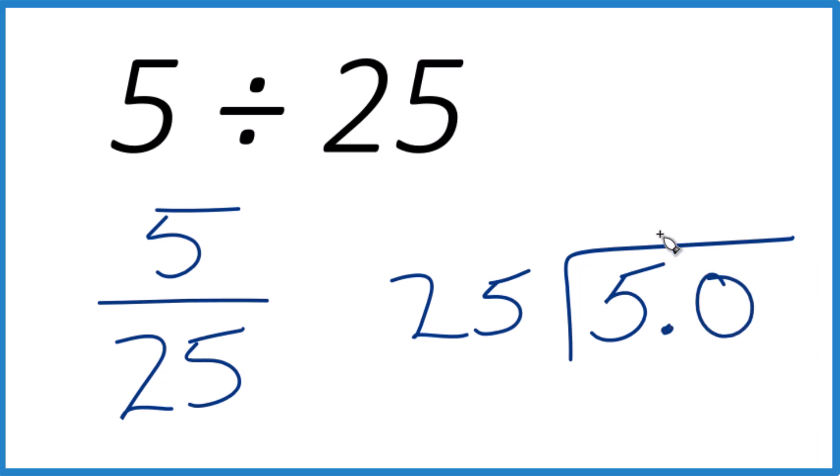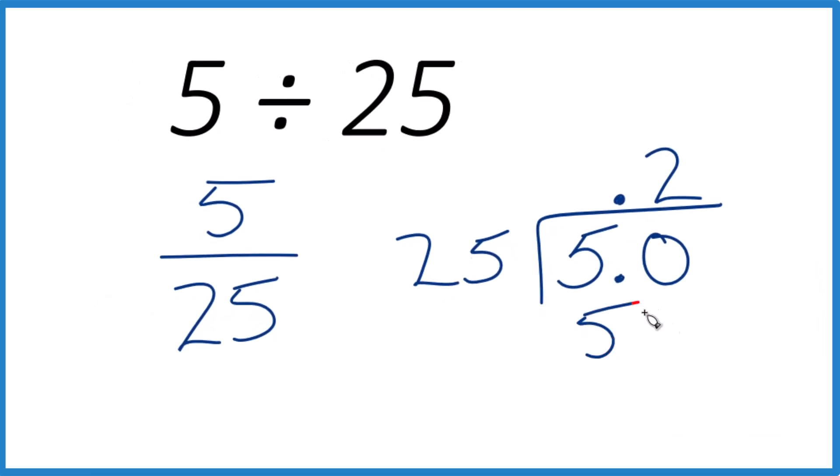It's still 5, but if we put a decimal up here, we can treat this as 50. So 25 goes into 50 two times. Two times 25 is 50. Now we subtract, no remainder.